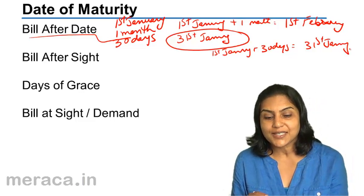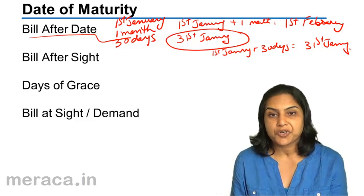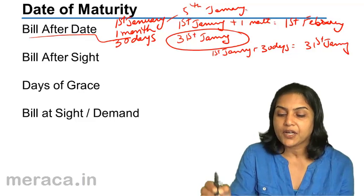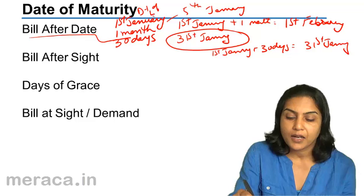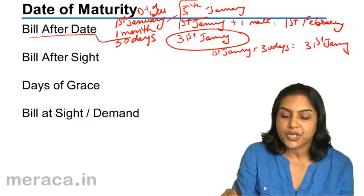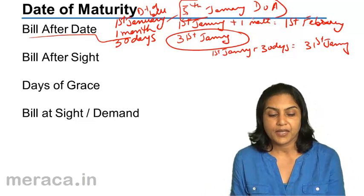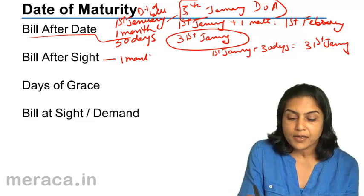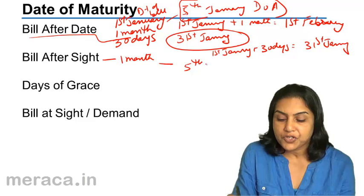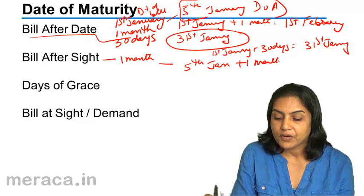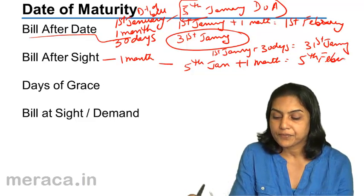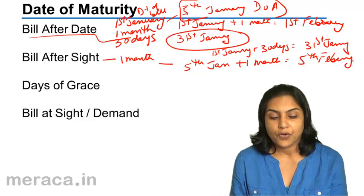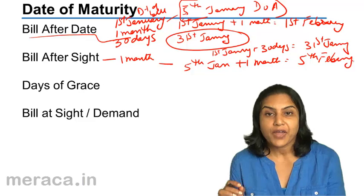This is bill after date. If it is bill after sight, what would it mean? Suppose the bill is dated 1st January but it was accepted only on 5th January. The date of bill is 1st January, but 5th January is the date of acceptance. In that case, if the maturity is 1 month after sight, then 5th January plus 1 month would be 5th February.